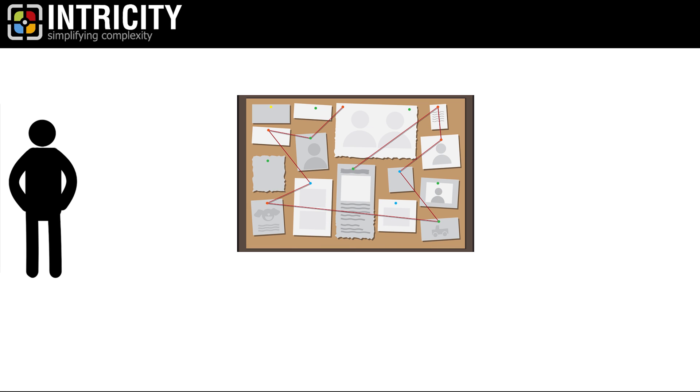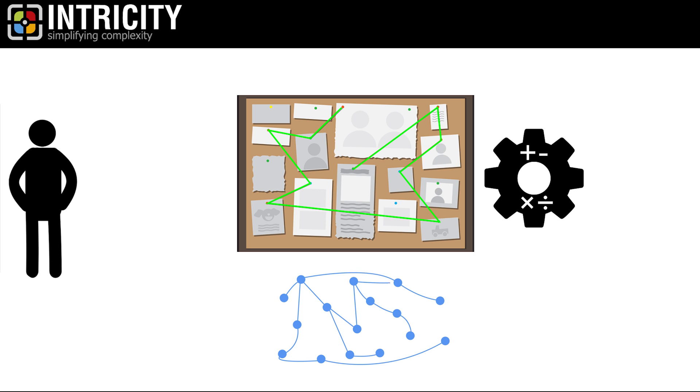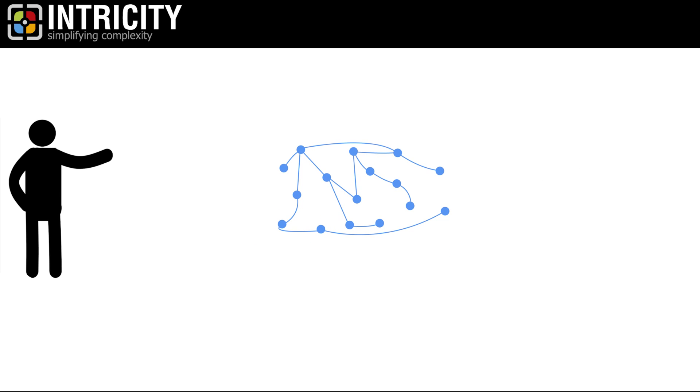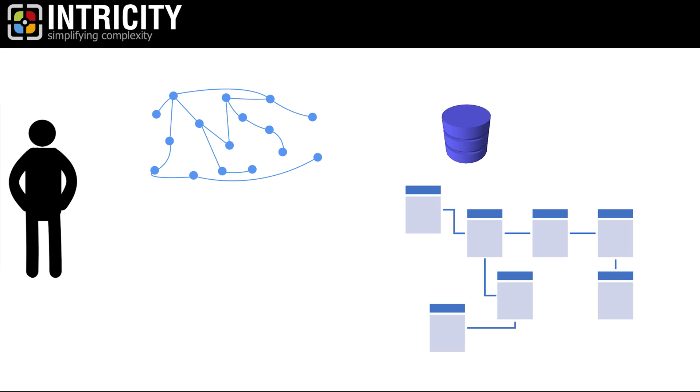Imagine taking that detective board and applying a mathematical engine that could query its data relationships. Well, that is a graph database. I want to explain graph databases by starting with the familiar territory of a relational database. One of the main traits of a relational database is the constraining nature of its relationships, and that makes it ideal for processing transactions and building what I would call deterministic analytics.